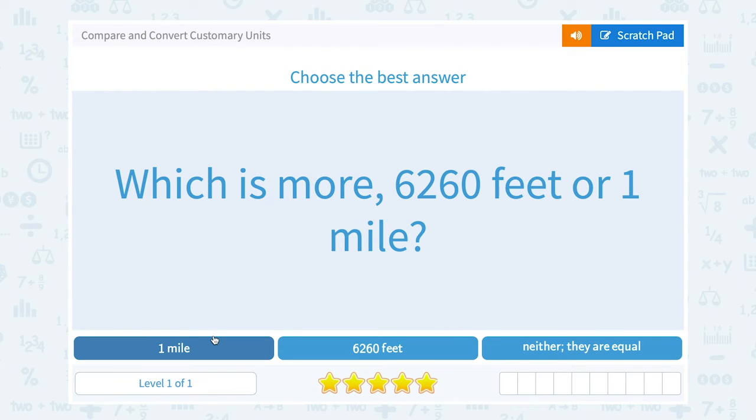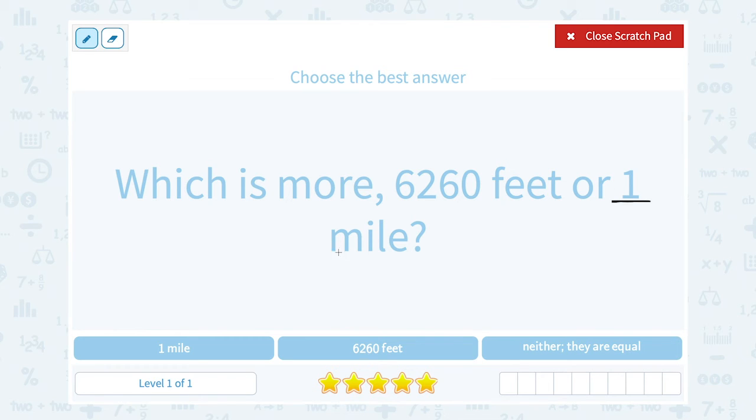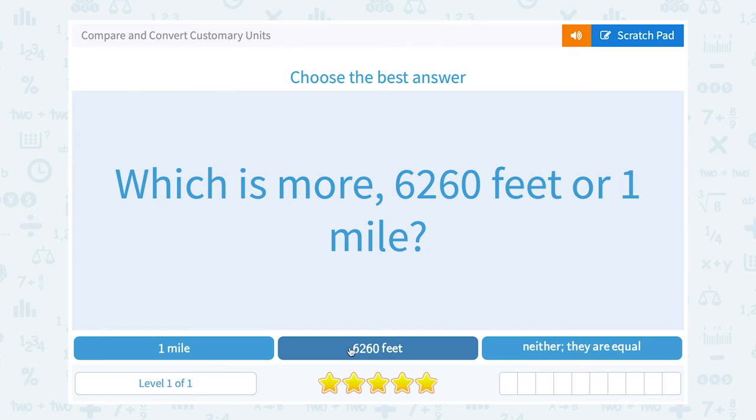This time, they're giving us a slightly trickier question, which is more, 6,260 feet or 1 mile? Remember we said 1 mile was equal to 5,280 feet. So if we compare these in feet to feet, we can see that 6,260 feet is more than 5,280 feet. So that must be more than 1 mile. So 6,260 feet would be more.